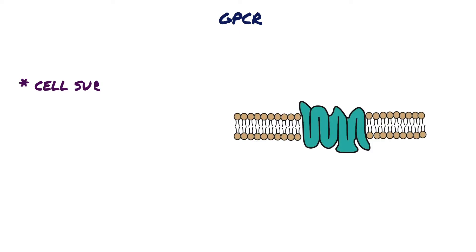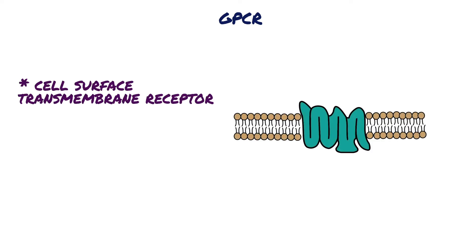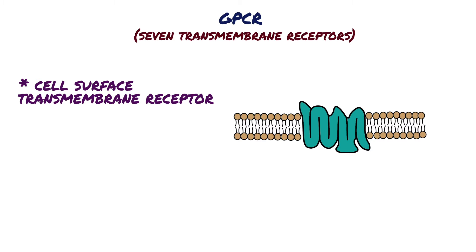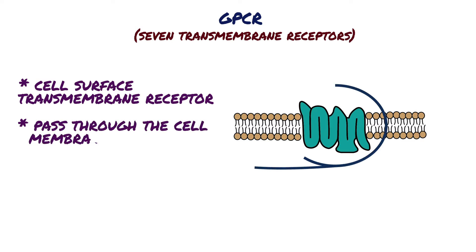A G-protein coupled receptor is a cell surface transmembrane receptor. G-protein coupled receptors are also called seven transmembrane receptors because they pass through the cell membrane seven times.